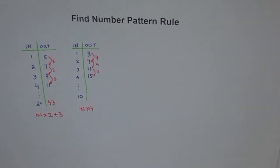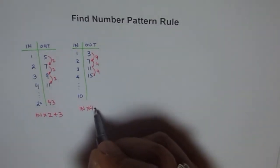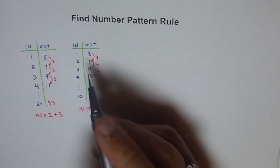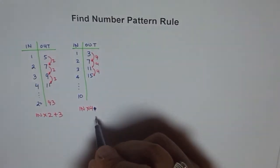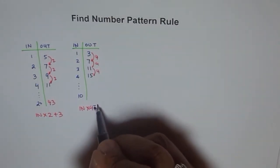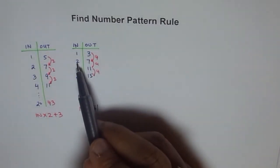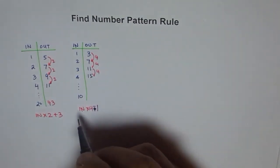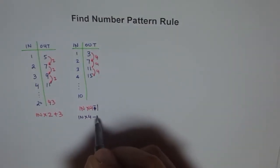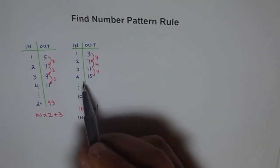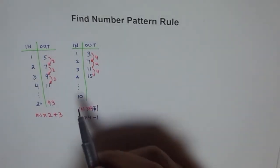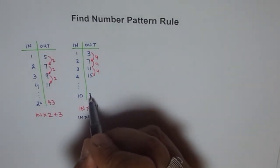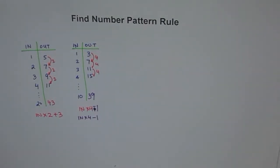So the rule should be input times 4 plus or minus something. Let's check: 1 times 4 is 4, but we need 3 — so we take away 1. Let's verify: 2 times 4 is 8, take away 1 is 7 — it works! So the rule is input times 4 minus 1. For 4: 4 times 4 is 16, take away 1 is 15 — it works! For input 10: 10 times 4 is 40, minus 1 gives us 39.